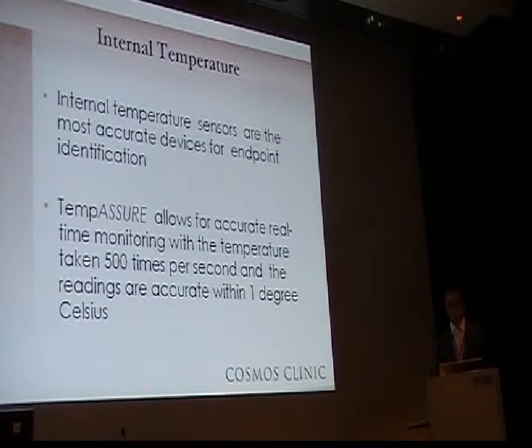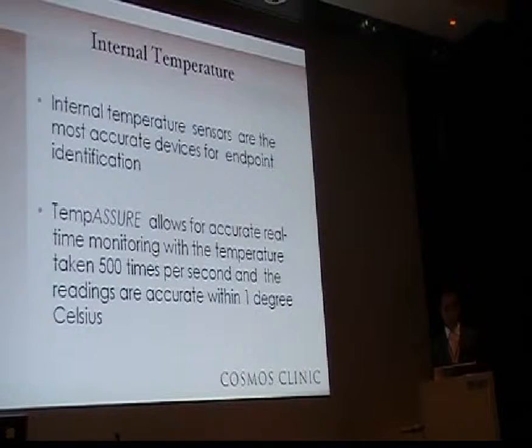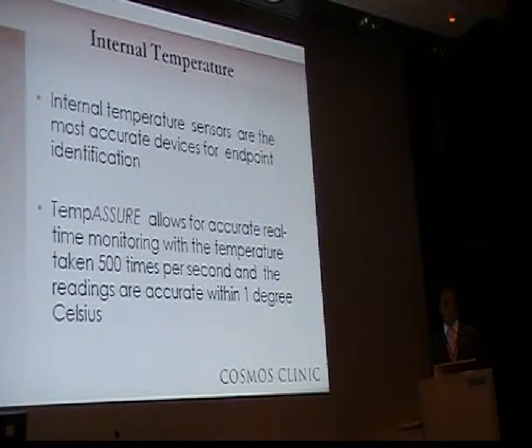The second endpoint is internal temperature. Internal temperature sensors are the most accurate devices for endpoint identification. The temperature allows for accurate real-time monitoring, with the temperature taken 500 times per second, and the temperature given is within 1 degree Celsius.